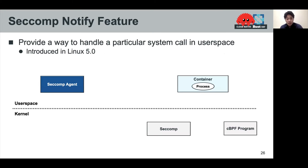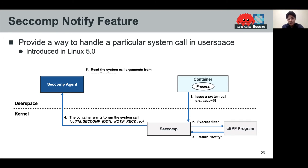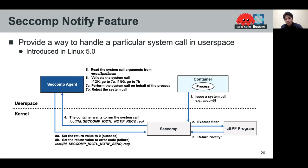Here I'll explain the seccomp notify feature, introduced in Linux 5.0. Seccomp notify provides a way to handle particular system calls in user space. In this example, we have a container and a seccomp notify agent which handles system calls on behalf of the container. First, the container issues a system call. Second, seccomp notify catches the system call, executes the BPF program, and the BPF returns notify. After that, seccomp notify asks the seccomp notify agent whether to run the system call, and the agent makes a decision on whether the container performs the system call. To make the decision, the seccomp notify agent reads the system call arguments and validates the system call. If okay, the agent performs the system call on behalf of the process; otherwise it rejects the system call. When the agent successfully executes the mount system call, the agent sets the return value and returns it to the container.